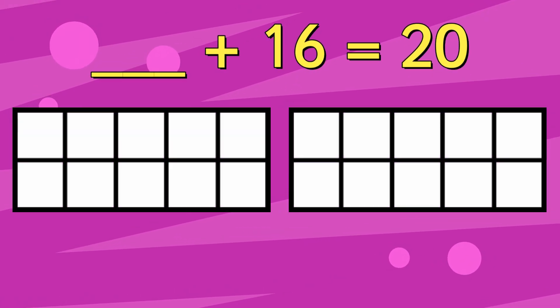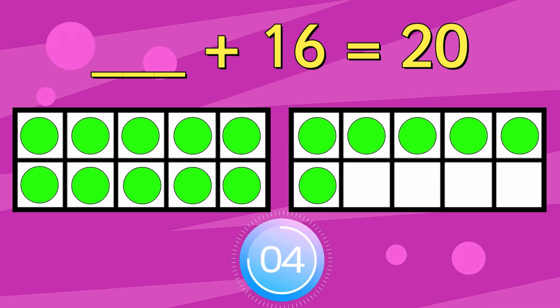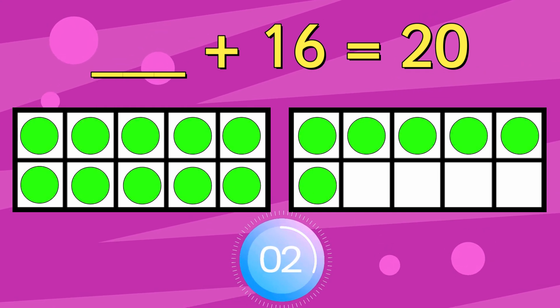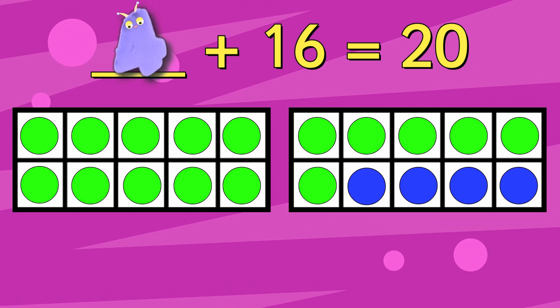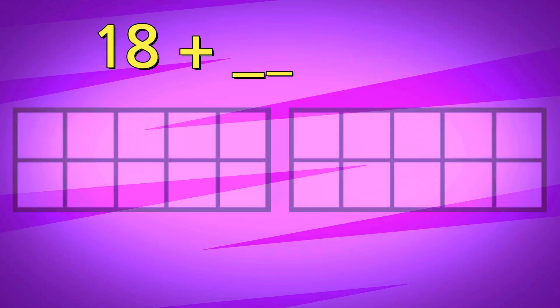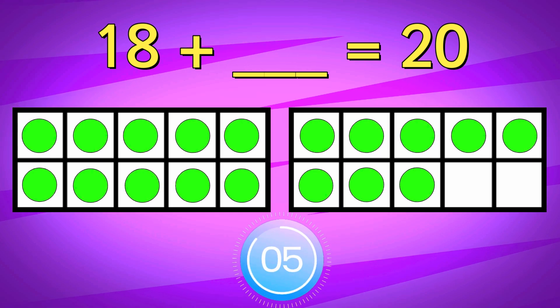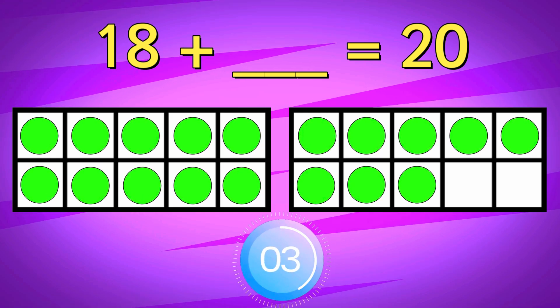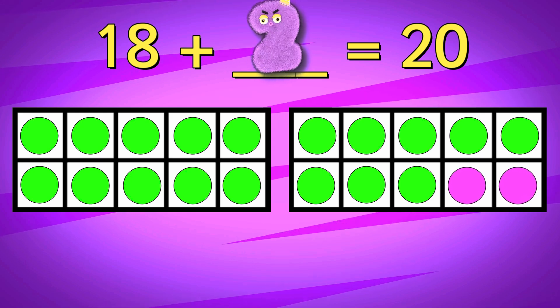Something add 16 equals 20. The answer is 4. 18 add something equals 20. The answer is 2.